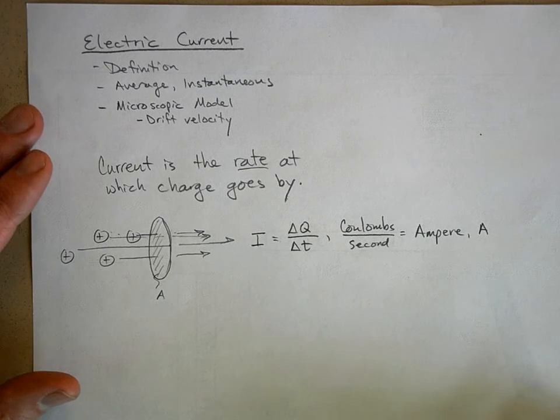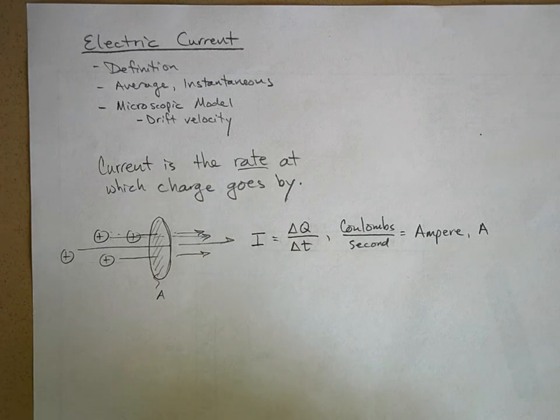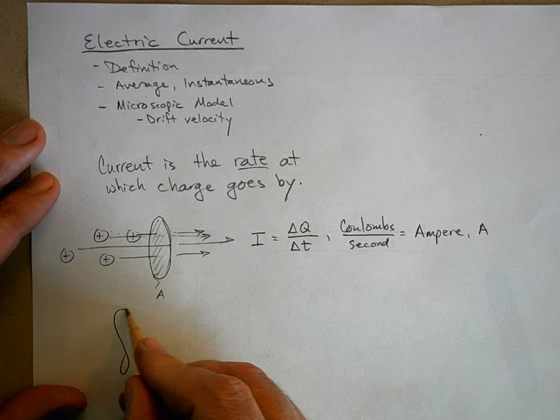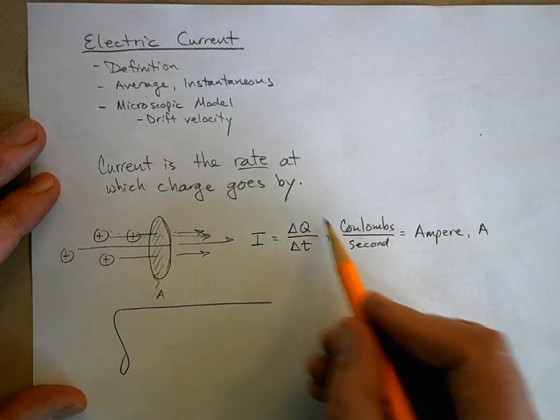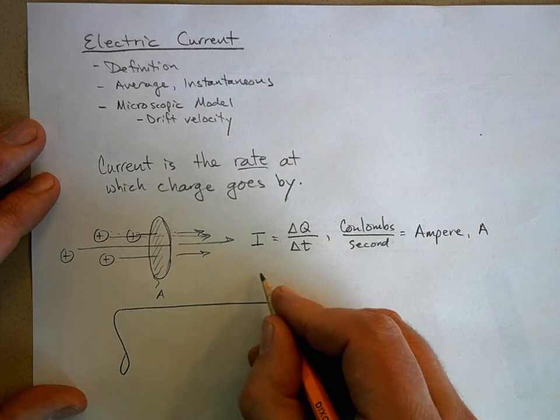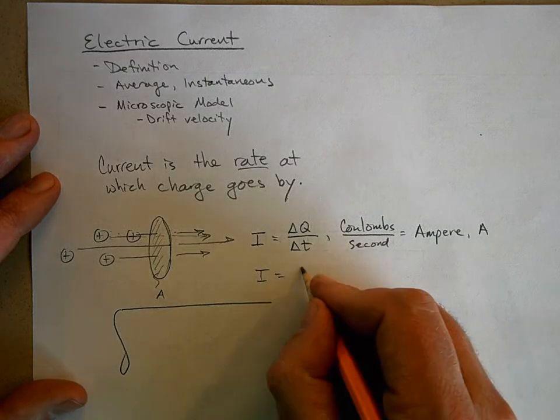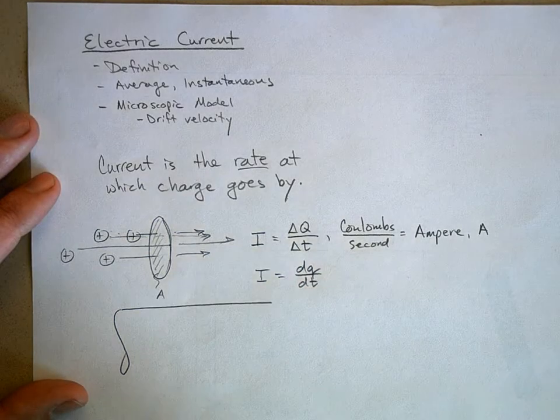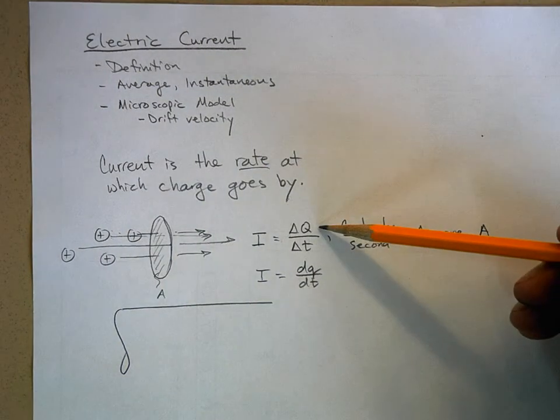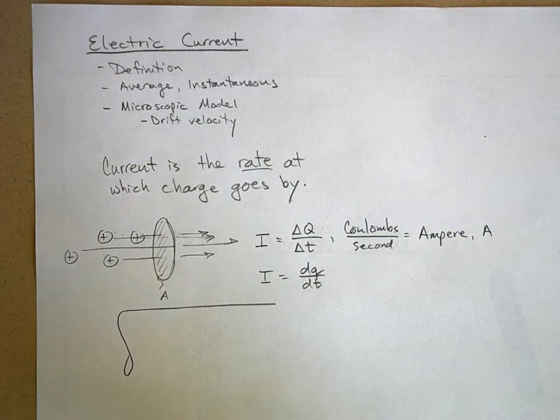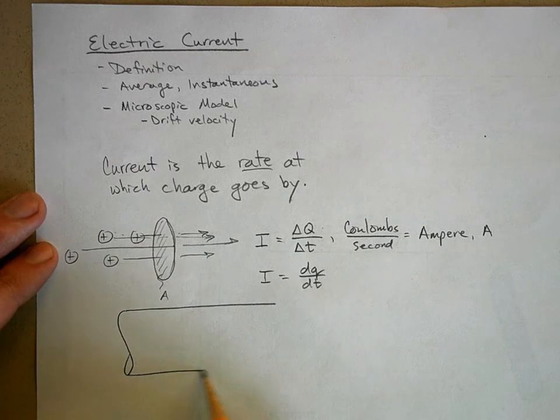Now at a microscopic level – oh, and then this is average current. To change it to instantaneous current, we just take the limit of this as delta t approaches zero, and you just get dQ/dt. Notice that a quantity of charge is a scalar, time is a scalar, so current is actually a scalar, even though it kind of has a direction to it. Current will flow through a wire, but current itself is a scalar.